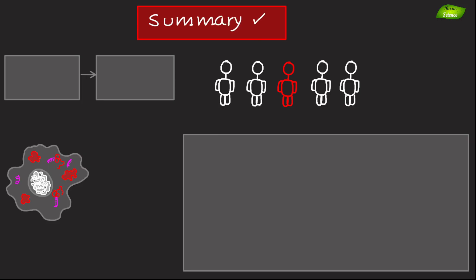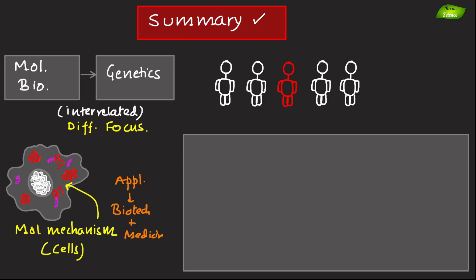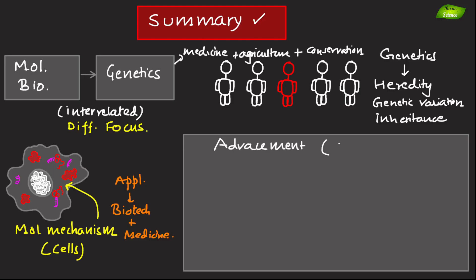Let's discuss the summary. While molecular biology and genetics are interrelated, they still have distinct areas of focus. Molecular biology is primarily concerned with the molecular mechanisms within the cell and their applications in biotechnology and medicine. Genetics, on the other hand, focuses on heredity, genetic variations, and the principles of inheritance with applications in medicine, agriculture, and conservation. Both fields contribute significantly to the advancements in science and technology, but their end goals, techniques, and applications highlight their distinct areas of emphasis.